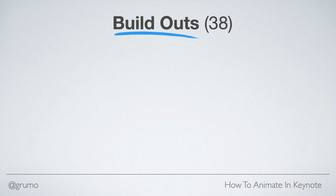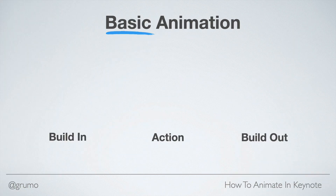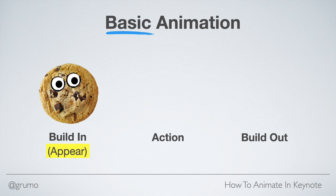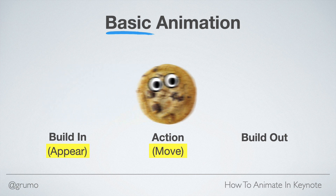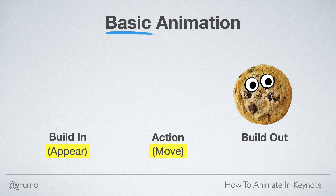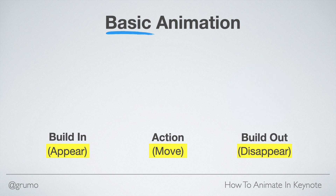The simplest animation will have a build-in, an action, and a build-out. So let's say that the build-in is to appear, then we're going to move the cookie to the right — that's going to be the move action — and then disappear for the build-out.